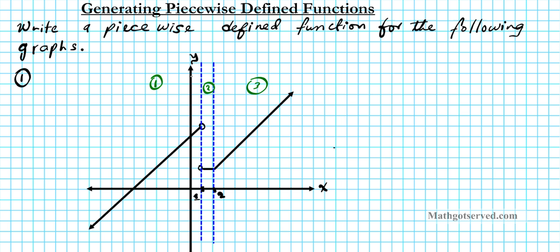For region one, we have a specific inequality for x that applies here. We have an open circle as indicated in this line and then the line goes way to the left. So for region one, this line — anything less than one, excluding one — is defined by the inequality x is less than one. This is going to be the constraint on the first function: it's whatever the function is as long as x is less than one.